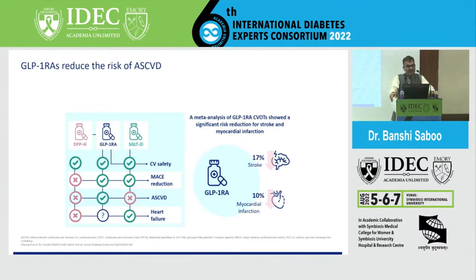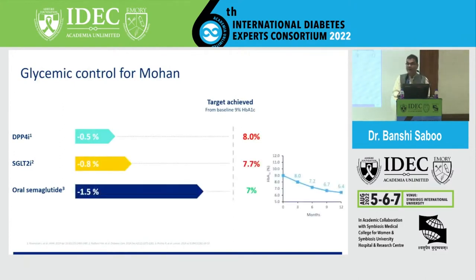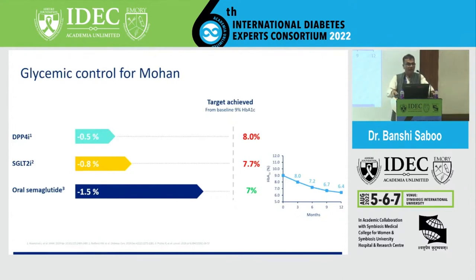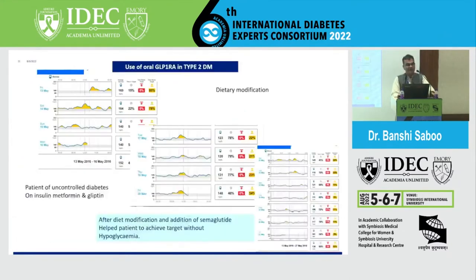For Mohan's glycemic control, we would like to change from DPP4 and add either SGLT2, oral semaglutide, or both — and definitely stop DPP4 when adding GLP-1. This patient could be on a reduced dose of insulin, continued with metformin, SGLT2, and oral semaglutide, or just change DPP4 to oral semaglutide. Regarding weight reduction, SGLT2 gives benefit but semaglutide gives more benefit for this patient already on multiple oral anti-diabetic agents.